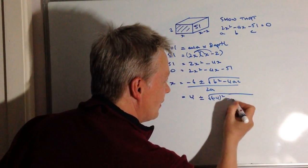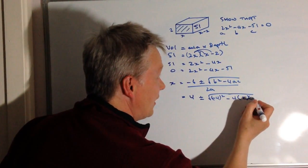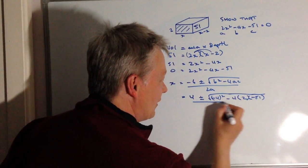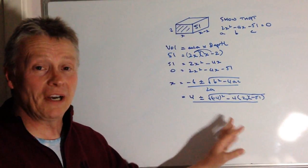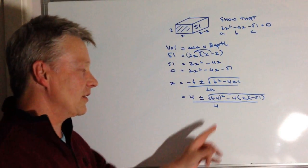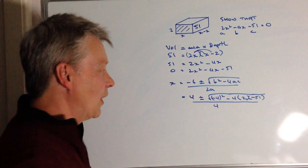And then I've got minus 4 times a which is 2 and c which is minus 51. Now fortunately on this particular question, there's a whole lot of minuses floating around that you need to deal with.